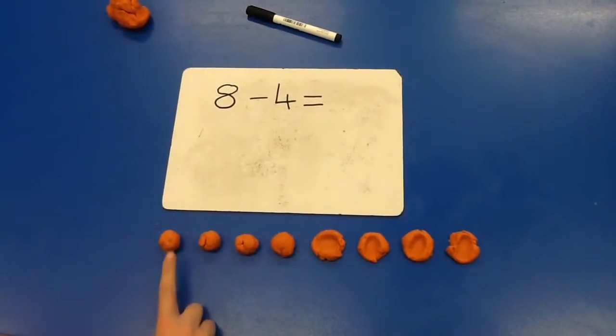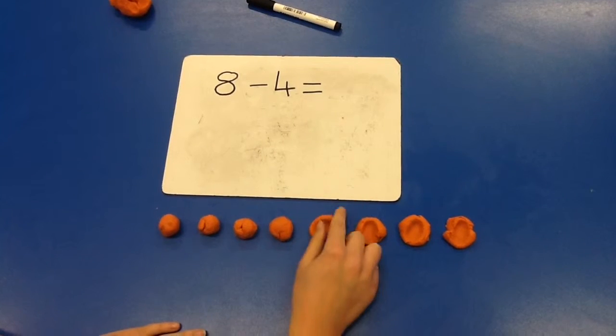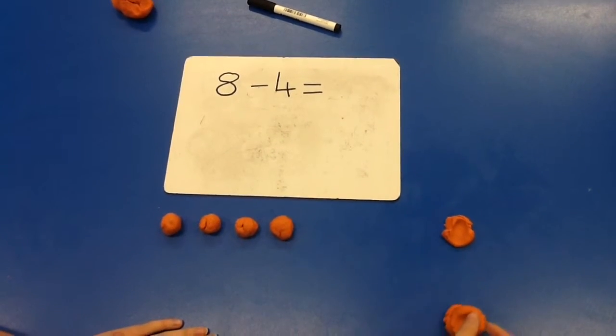When we take away 4: 1, 2, 3, 4 left. Let's double check. 1, 2, 3, 4.